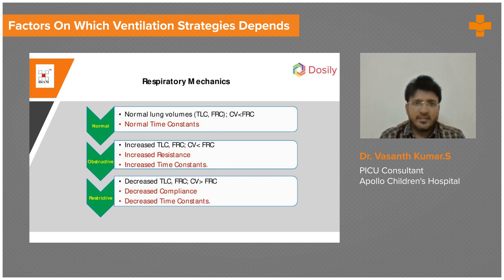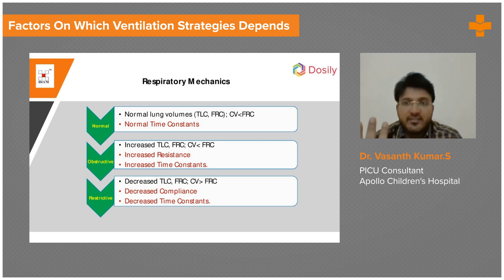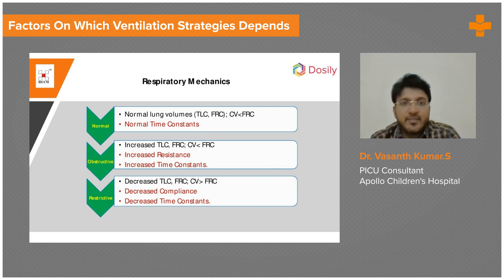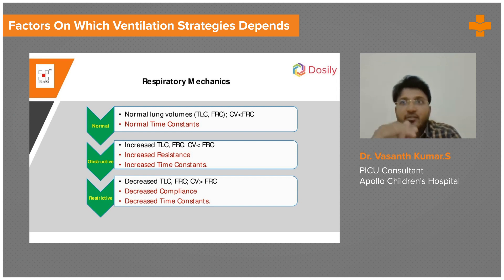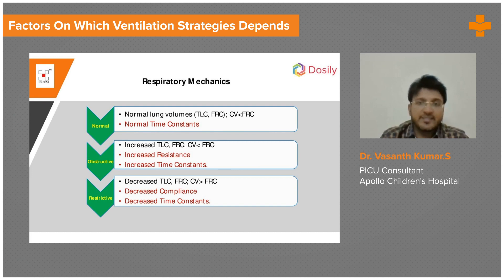If the time constant is high, it helps you set the expiratory time. In asthma, air is trapped inside the alveoli and you want it to come out — it takes three time constants for 95% of the air to exit. So you keep the inspiratory time shorter and the expiratory time longer, allowing all the air to come out. Similarly, in pneumonia and ARDS, compliance is low so the time constant is low, meaning the expiratory time is short and the inspiratory time is longer. That is why in ARDS and severe pneumonia the inspiratory time is longer, and in asthma the expiratory time is longer.